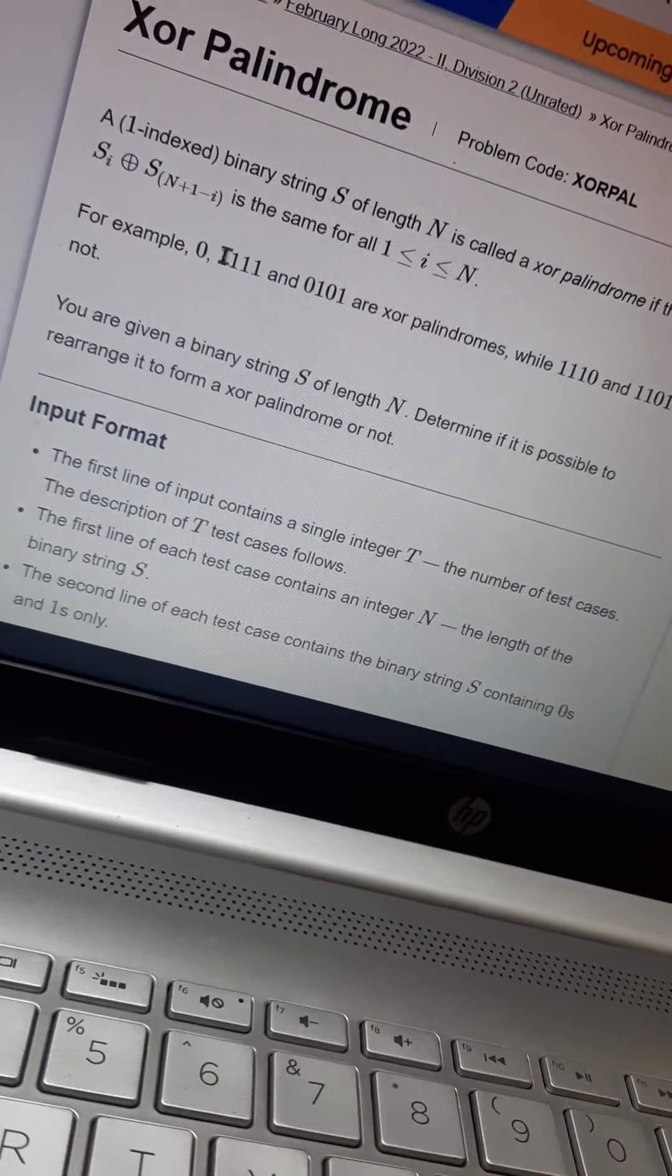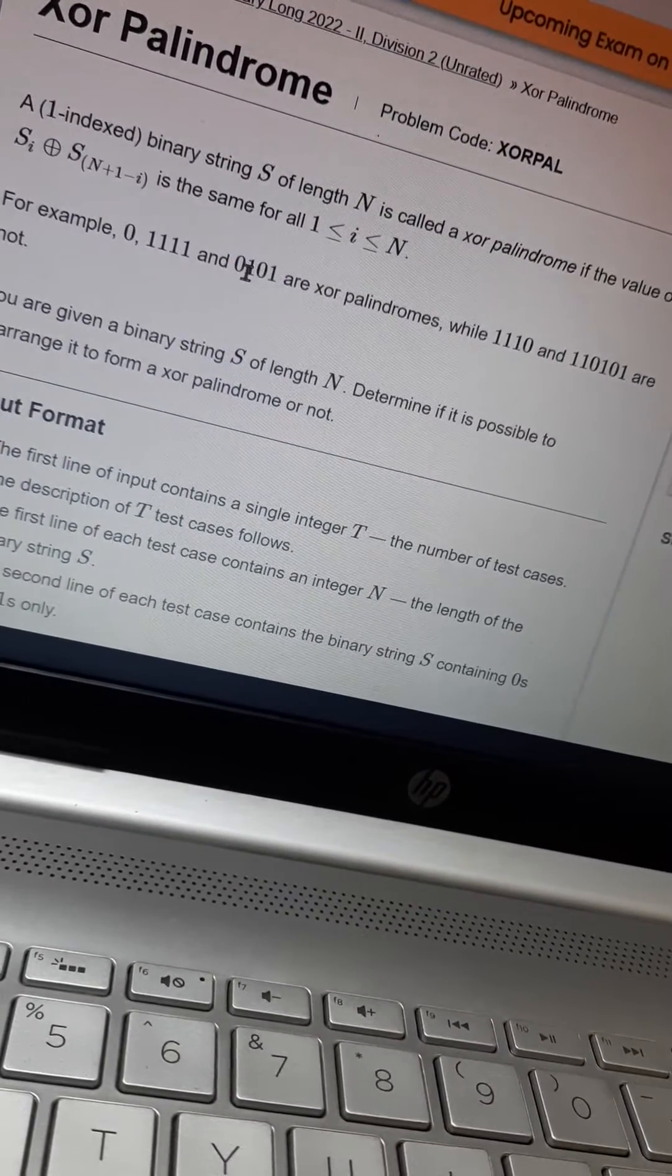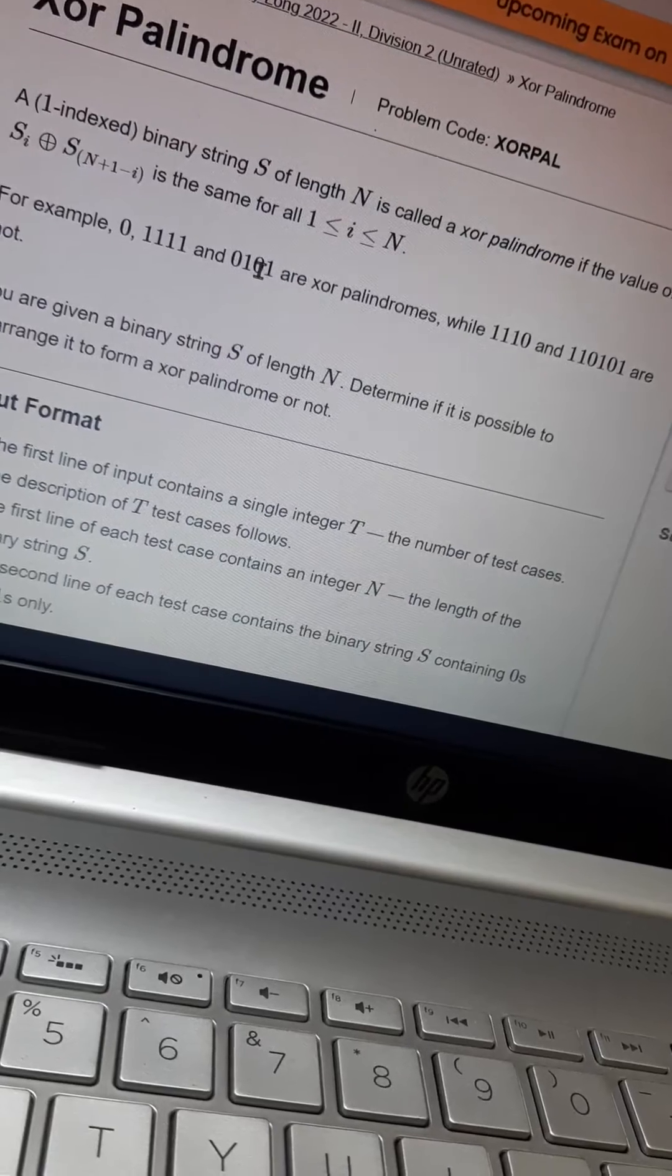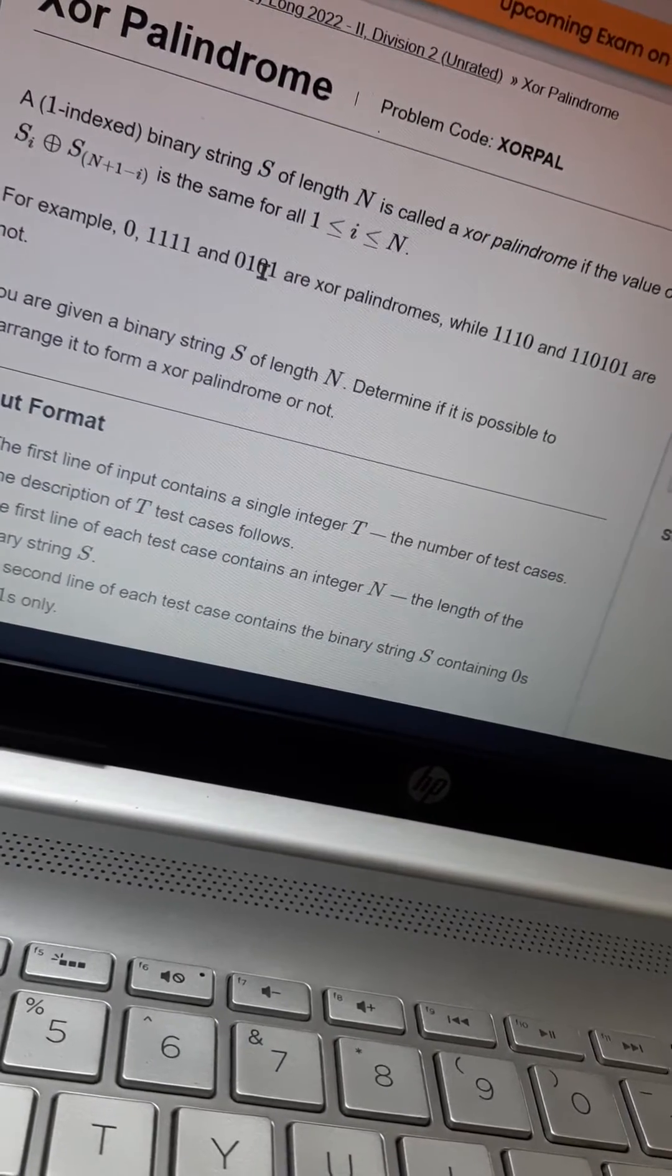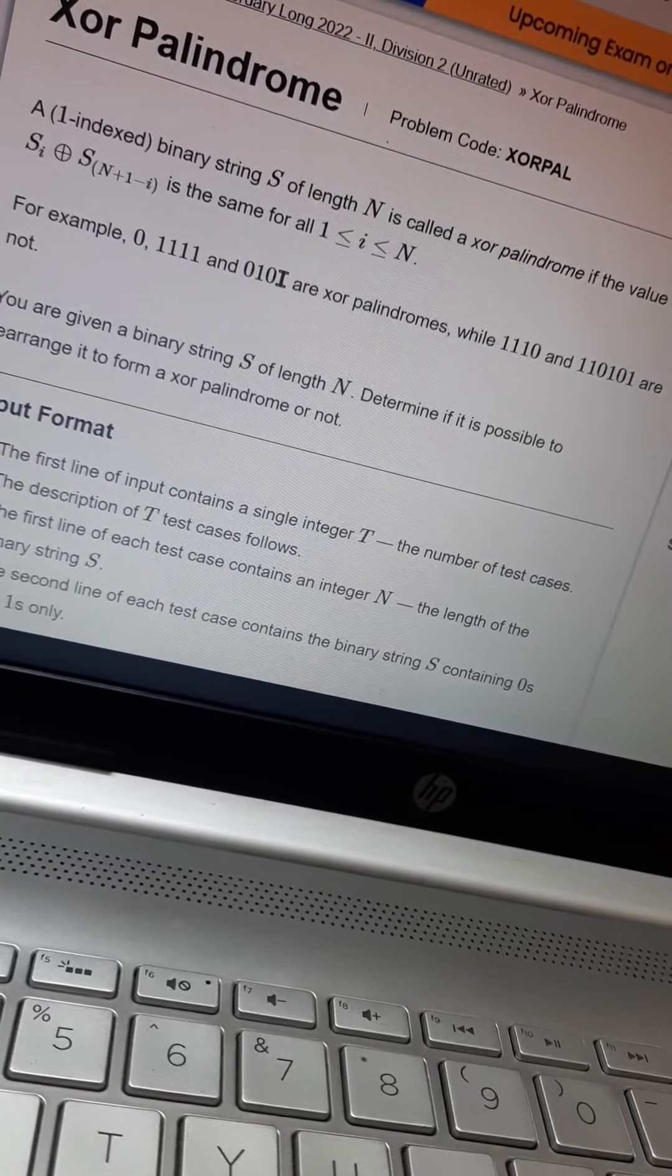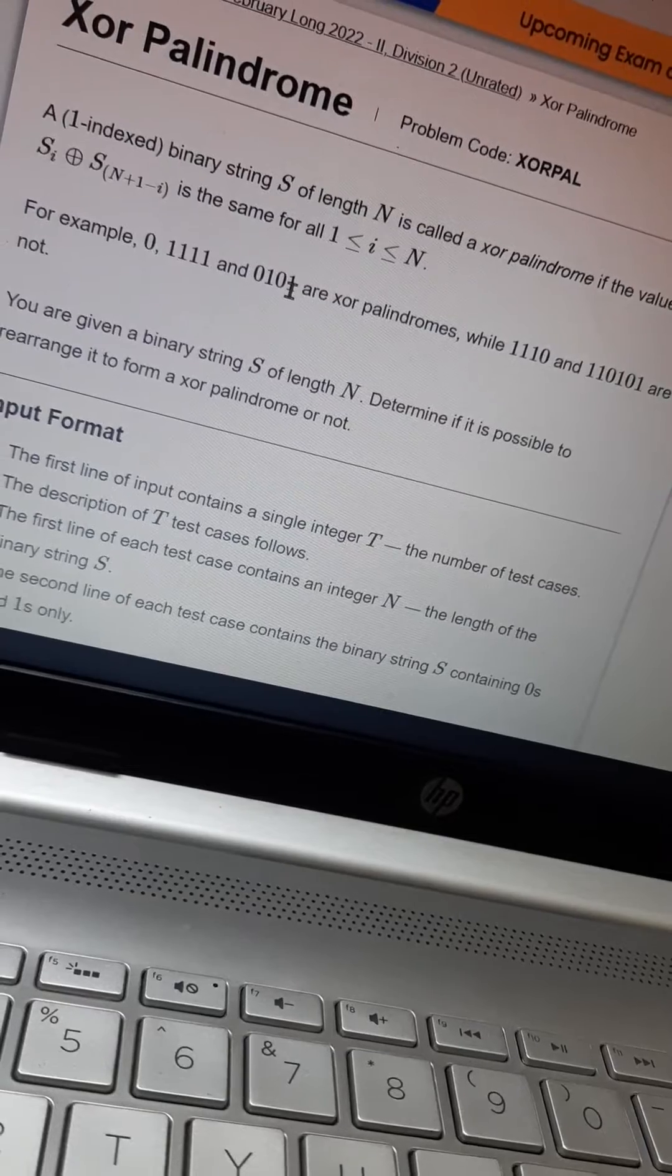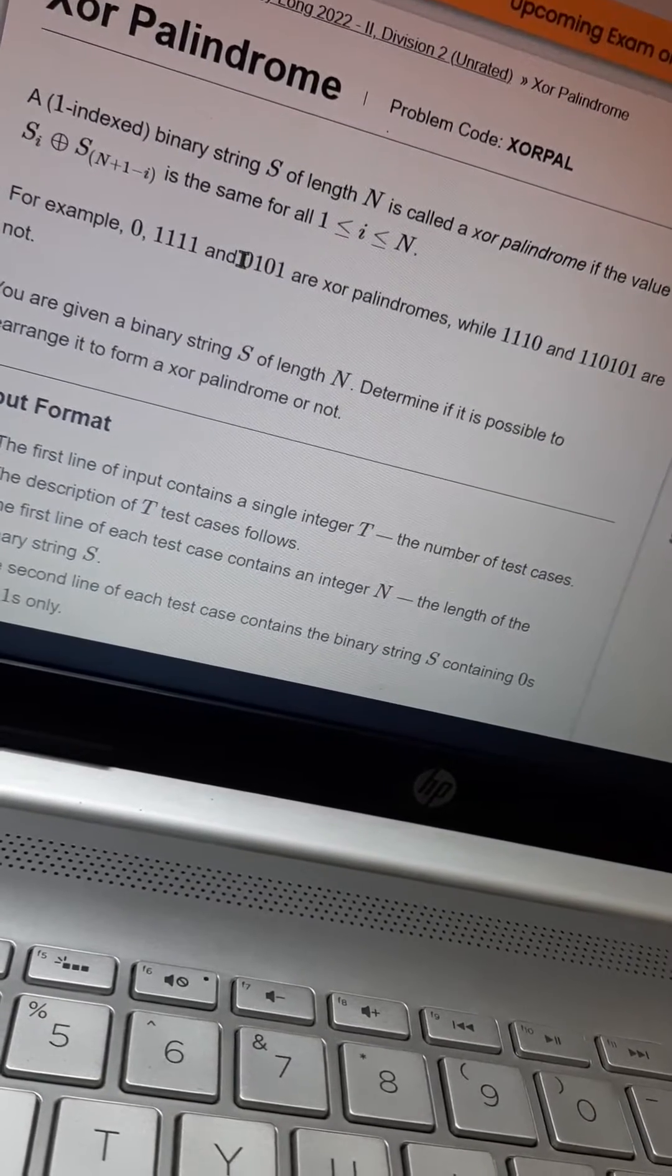So it is same for all the cases. For 0101: 0 XOR 0 is 0, and 1 XOR 1 is also 0, so it is same for all. This is an XOR palindrome.